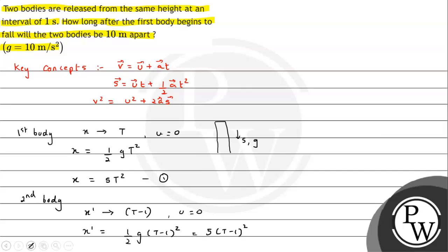According to the given condition, the condition we have is x minus x dash equals 10. The distance between the two should be 10 meters. So this is the condition. So here we just substitute the values. And this can be written as 5, T squared minus 2T plus 1, and that will be equals to 10.